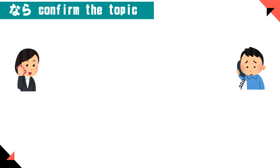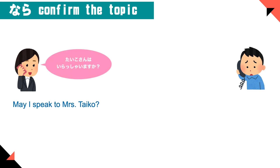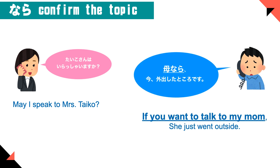Another example: a lady calls on the phone and a kid answers. She asks to speak to Taiko-san. The kid says: 'Haha nara ima gaishutsu shita tokoro desu.' — If you want to talk to my mom, she just went outside. By saying 'haha nara' in front of the sentence, you're confirming: if you want to talk to my mom, she just went out. Nara is often used this way.